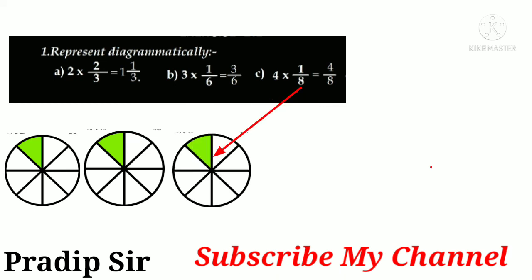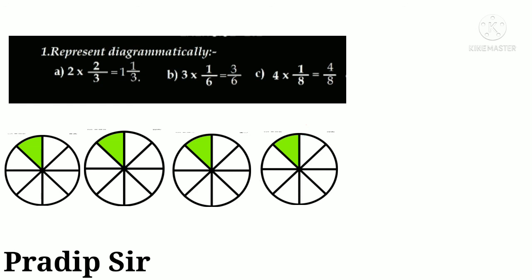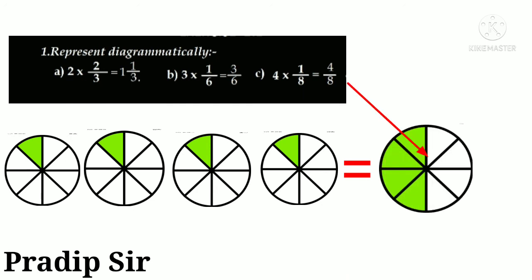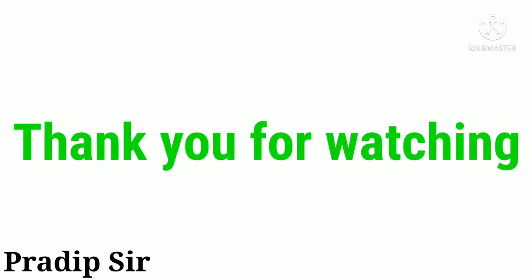After that, we'll give the equal sign, and the answer is 4/8. So we draw a circle which is divided into eight parts, and out of eight parts, four parts are shaded. Hope you understood, and thank you for watching.